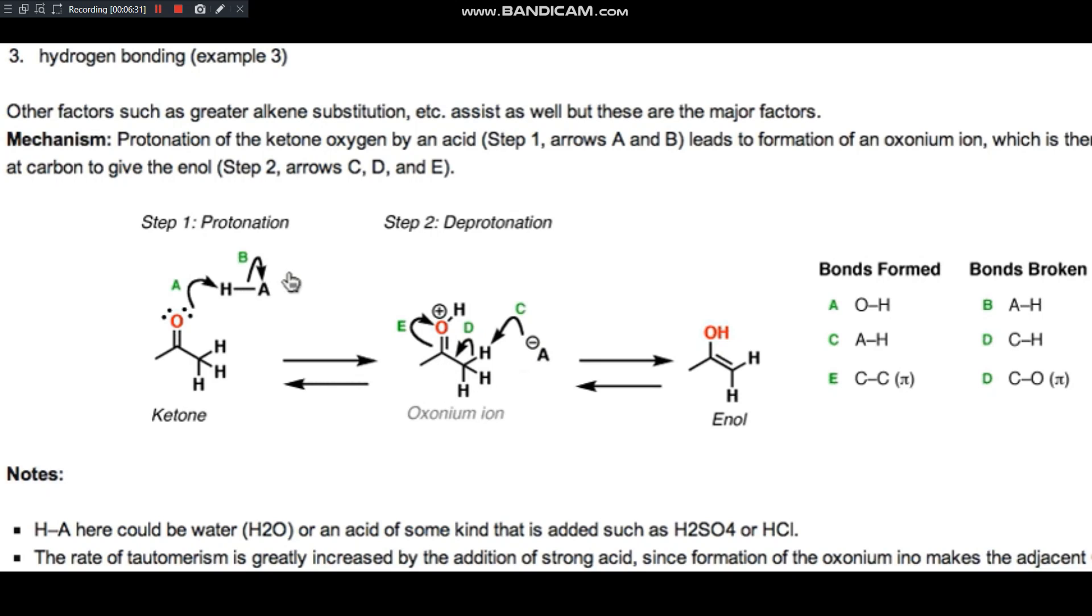And subsequently, whatever A minus is or some other base can come in and remove a proton from this carbon, and we will lead to the formation of the enol from here. So this is how these, notice we've got a total of five arrows. This is how this type of transformation is affected. By protonating the oxygen, we actually make this carbon a lot more acidic than it normally would be.